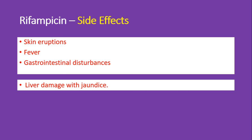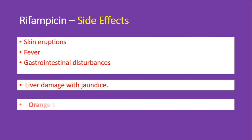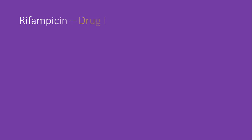After administration of rifampicin you need to monitor the liver function test regularly. Also, rifampicin commonly causes an orange tinge discoloration in saliva, sputum, tears, and sweat, which is not harmful.